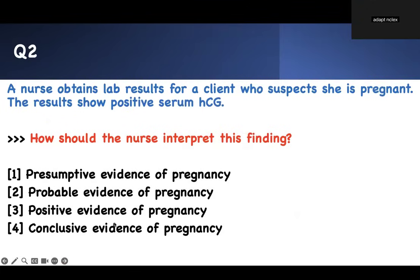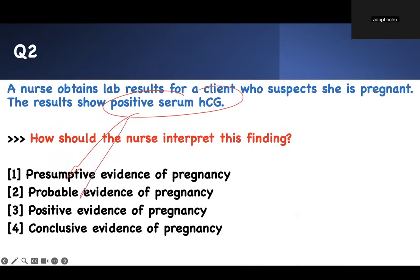Number two: a nurse obtained lab results for a client who suspects she's pregnant. The results show positive serum beta-hCG. How should the nurse interpret this finding? The concept for this question: write down what are presumptive, what are probable, and what are positive signs of pregnancy. Go for the buzzword — the buzzword is positive serum beta-hCG. Does this indicate a presumptive test, a probable test, a positive test, or conclusive evidence of pregnancy?